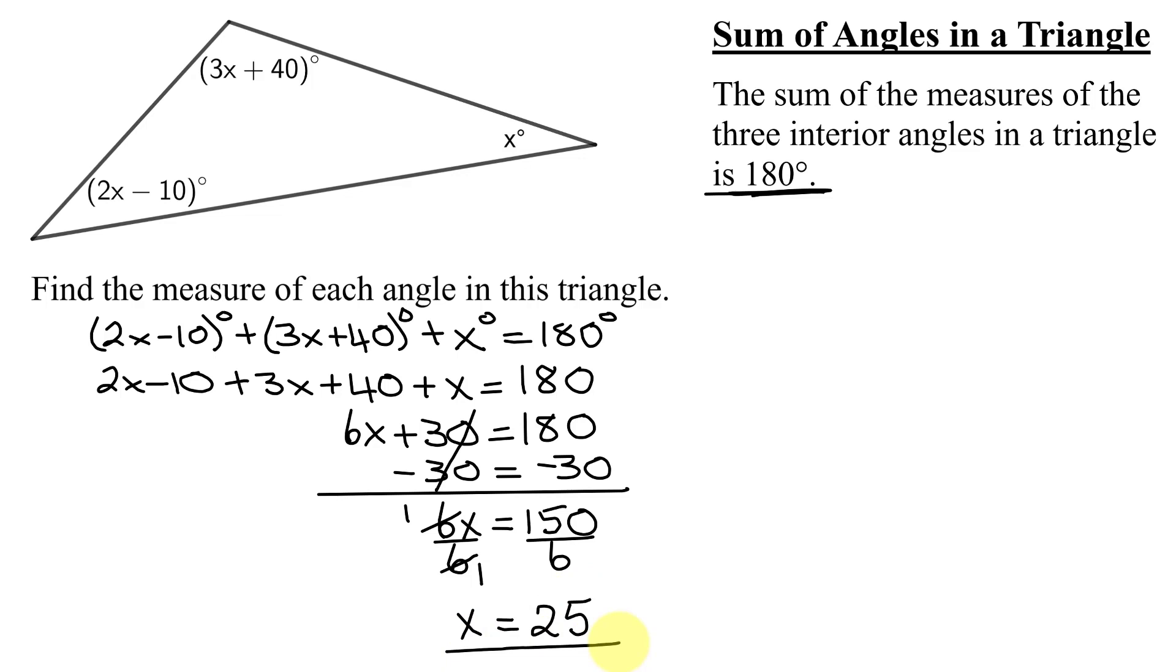Does that mean I solved the problem? No, they asked me to find the measure of each angle in this triangle. I know this one is 25 degrees, but I need to evaluate the other two when x is 25. So 2x minus 10 is 2 times 25 minus 10. 2 times 25 is 50. 50 minus 10 is 40.